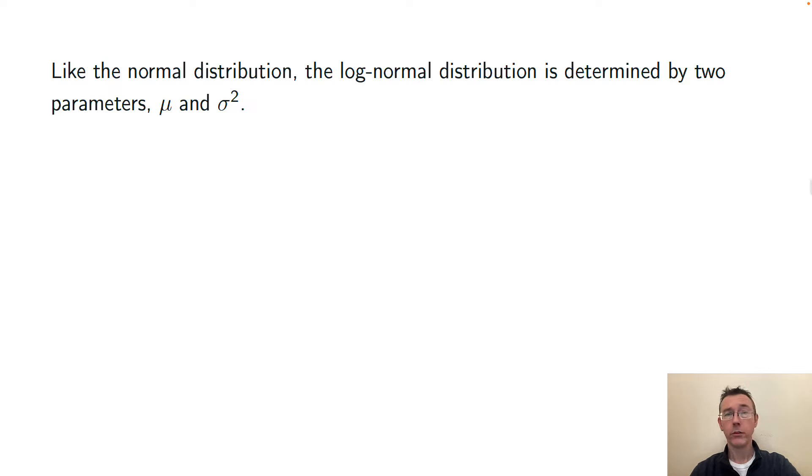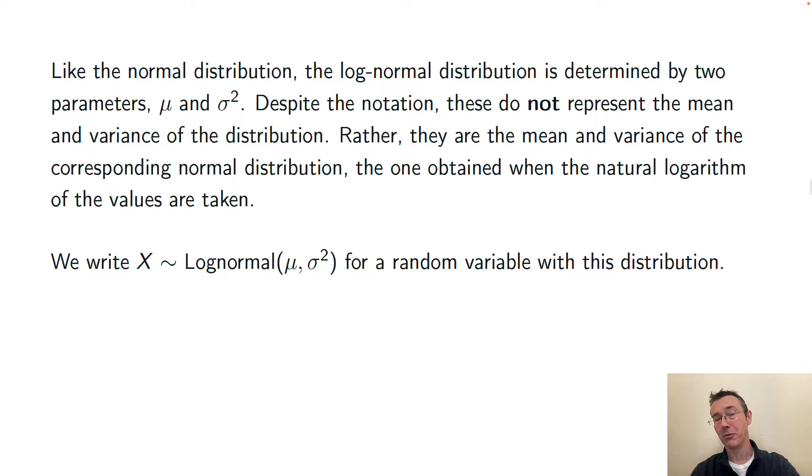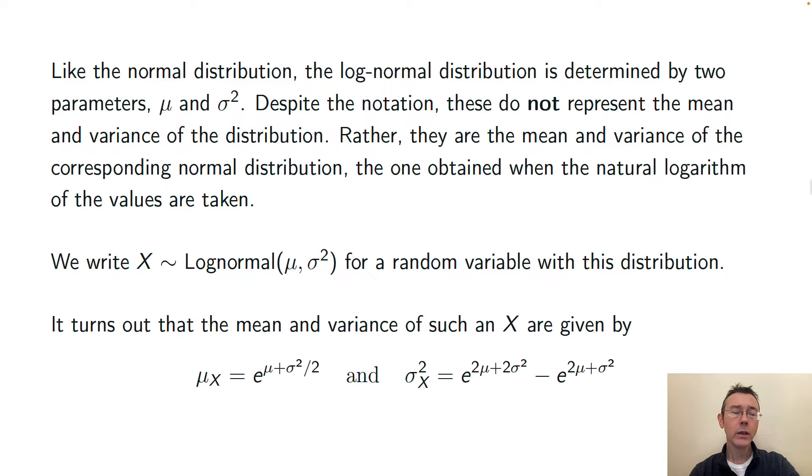All right, let's get into the log-normal distribution a slightly bit more mathematically. I promise I won't go too hard on the math. It's defined by two parameters just like the normal distribution itself, μ and σ². Now those are not the mean and variance of the log-normal distribution, but rather the mean and variance of the corresponding normal distribution, the one that you get when you take the natural logarithm of all the observations that you've got. Here are the formulas for the mean and variance of the log-normal distribution itself, but you should bear in mind that these are not going to be particularly representative of the center and spread of this distribution simply because there's so much skew.